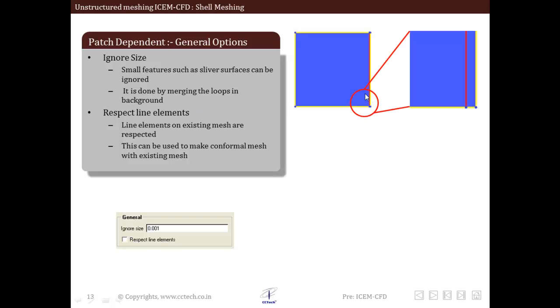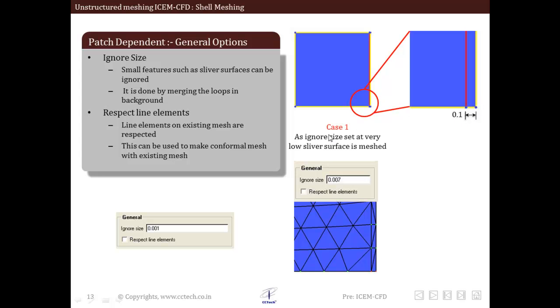As you can see if we zoom in on this, we have a 0.1 dimension small size feature. If this ignore size option is set at very low, sliver surface is meshed.